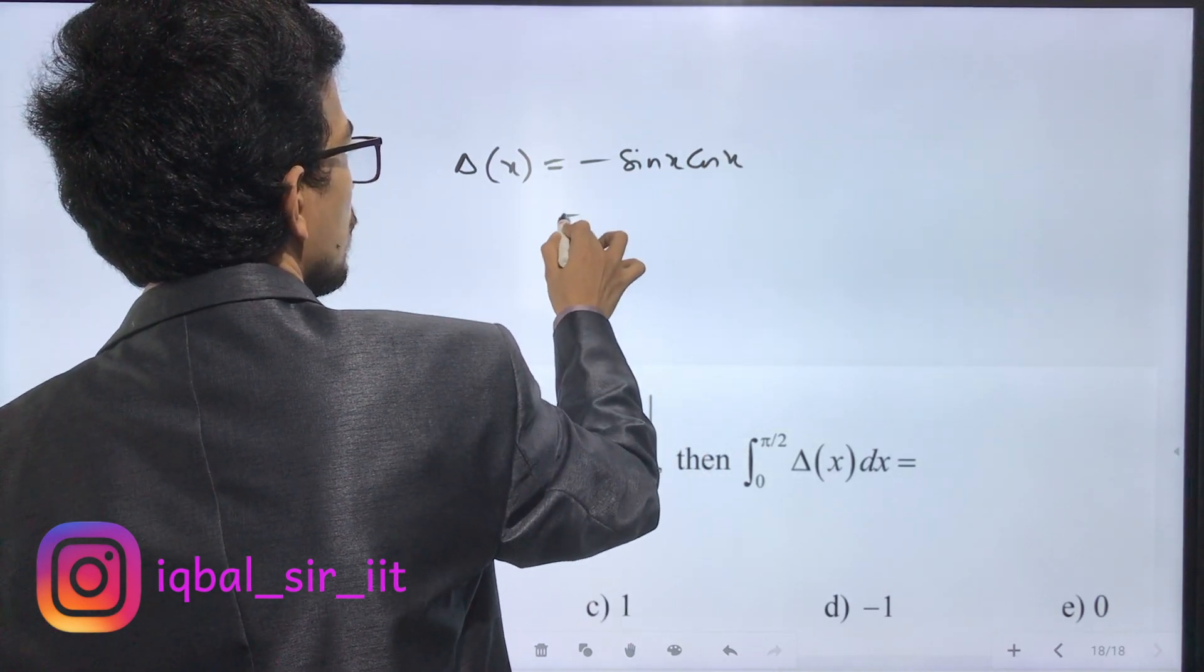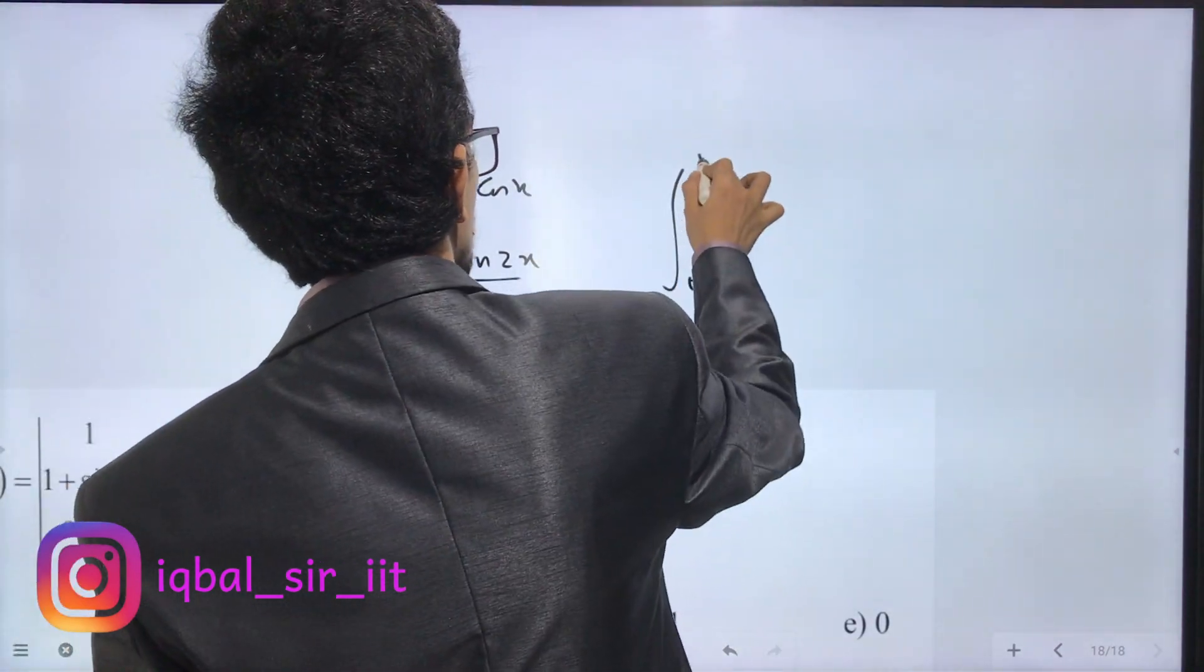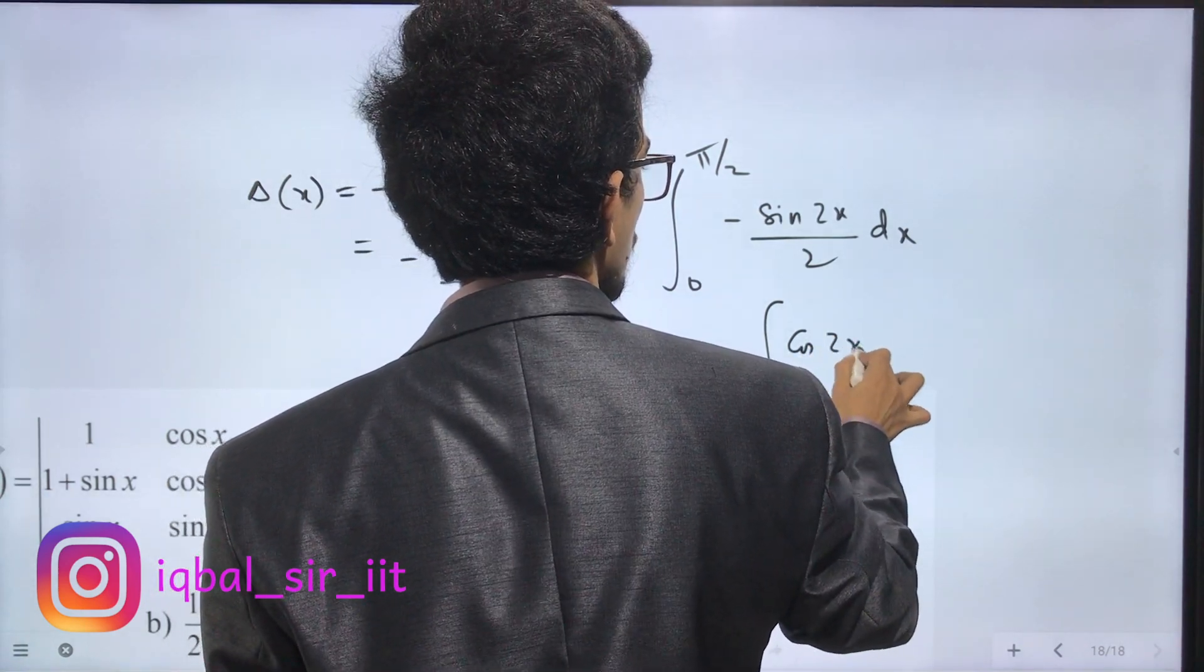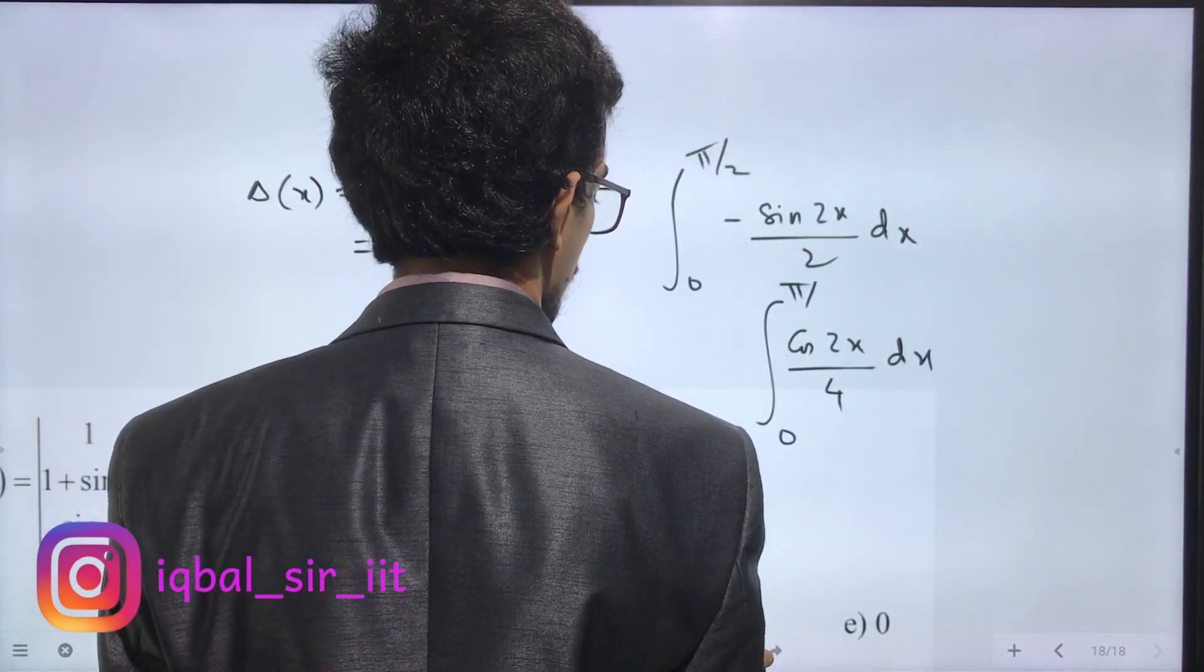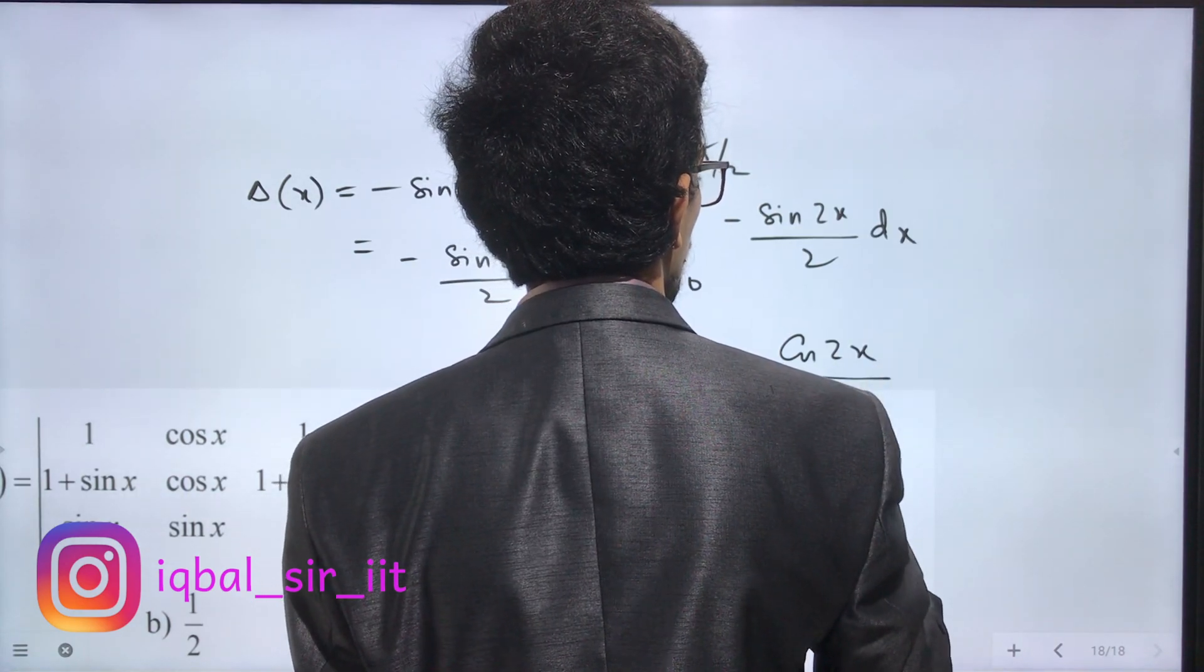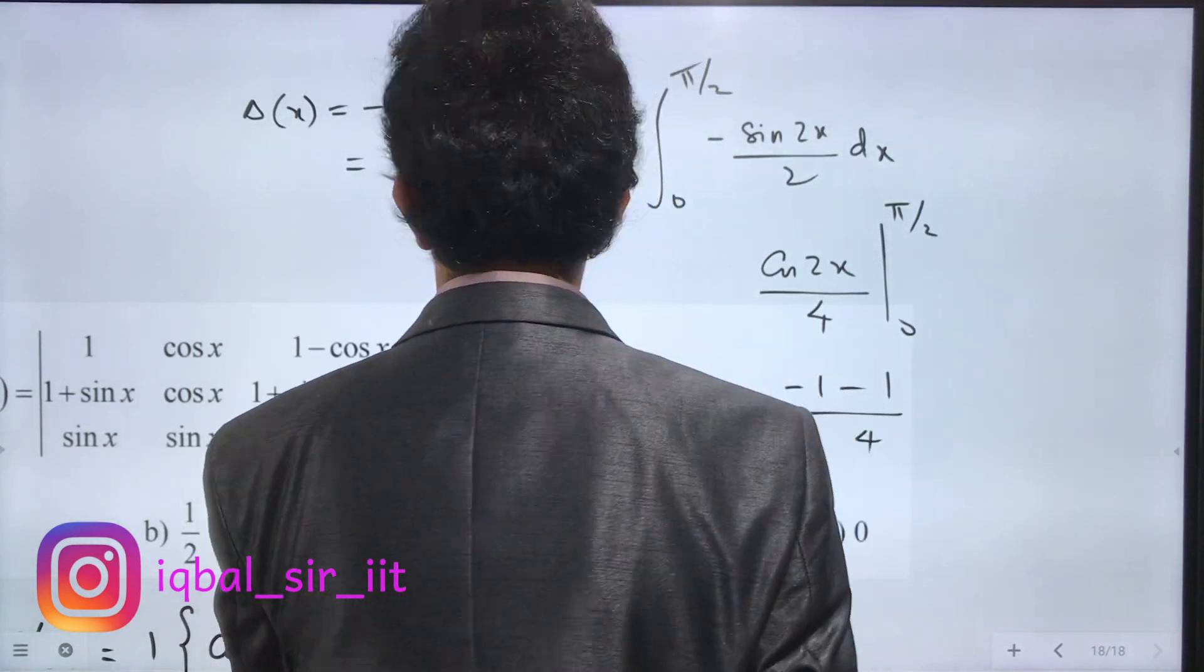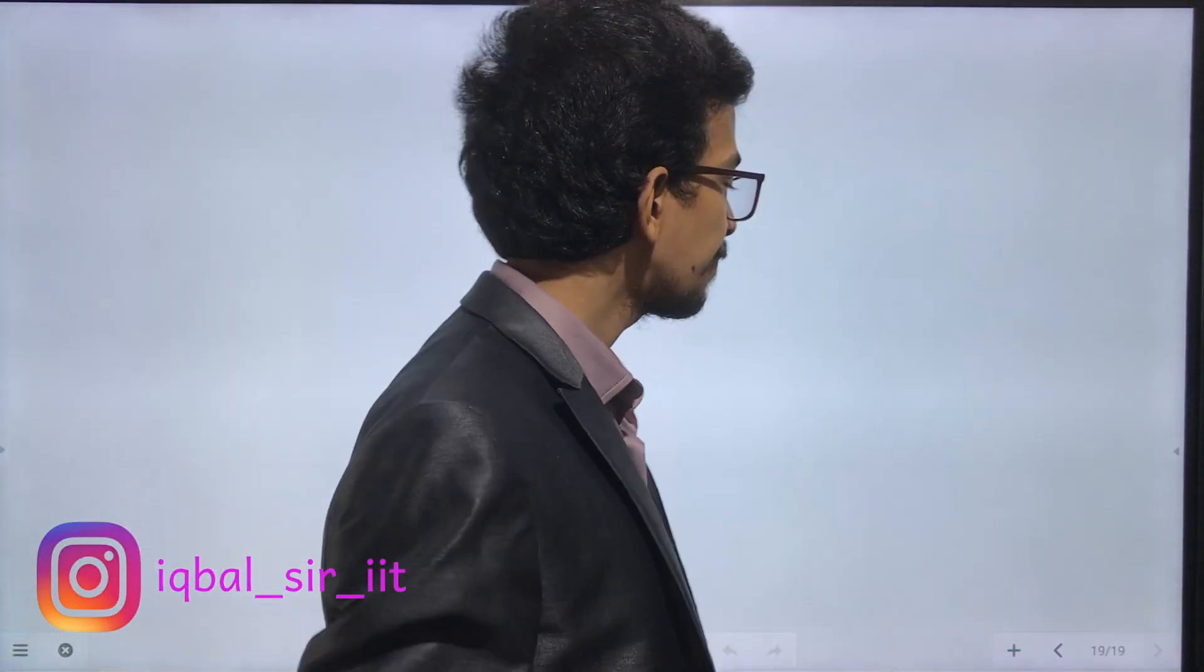Delta f(x) equals -sin x cos x, which equals -sin(2x)/2. The integral from 0 to π/2 of -sin(2x)/2 dx gives us cos(2x)/4 evaluated from 0 to π/2. The upper limit minus lower limit gives (-1/4) - (1/4) = -1/2. The answer is -1/2.